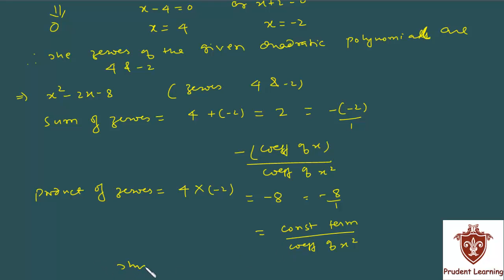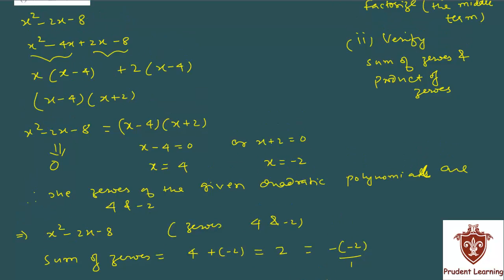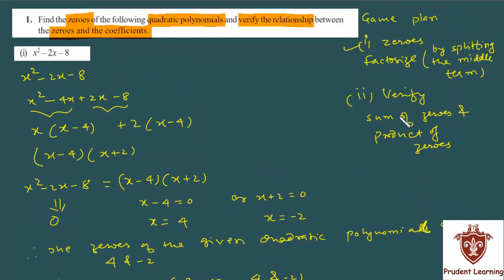This completes our solution. Question samajh gaye? Sabse pehle given polynomial ka aapko zeros nikalne hain — how? By factorizing the given quadratic polynomial by splitting the middle term. And after factorizing, jab aapko zeros mil jayein, toh uske baad relationship kaise establish karenge: sum of zeros aur product of zeros ke formulae ko use karke. Chalo, agla question dekhte hain.